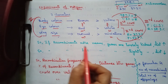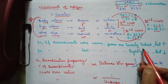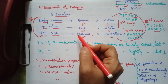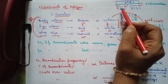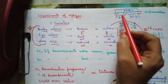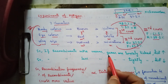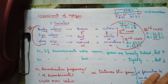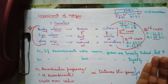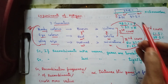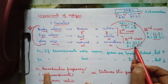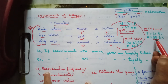Based on these results, Morgan proposed that if recombinants are more, the genes are loosely linked. All three genes corresponding to body color, eye color, and wing size are present on the same chromosome - the X chromosome. If recombinants are more, those genes are loosely linked because loosely linked genes can be easily segregated from one another.